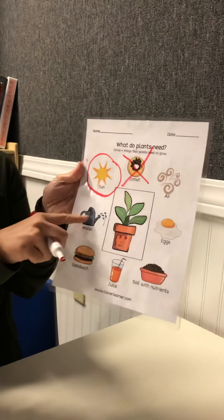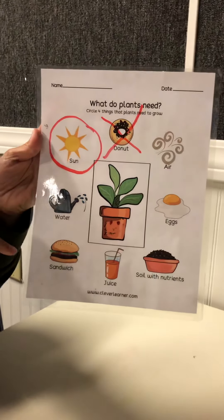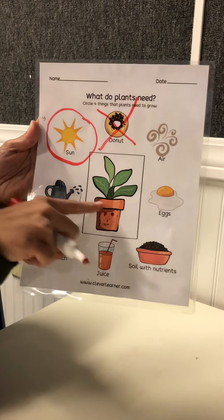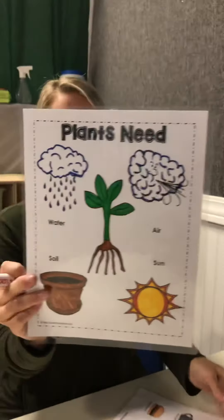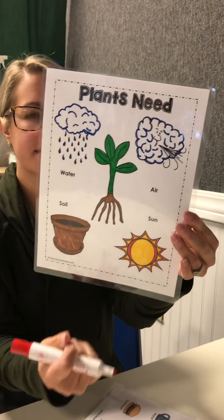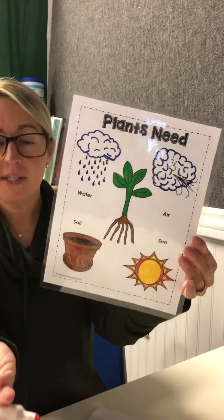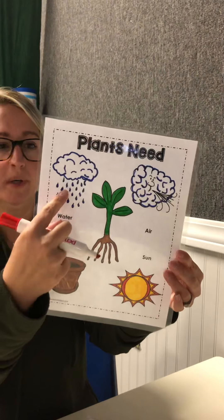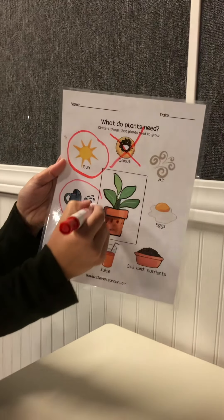The next one I see is water — there's our watering can. Does a plant need water to grow? Do you see water on our sheet? Yes. And remember, we talked about it in our book. Plants need water to grow, so that is a yes — we need to circle the water.